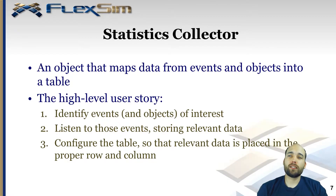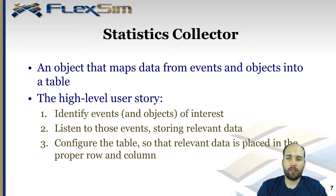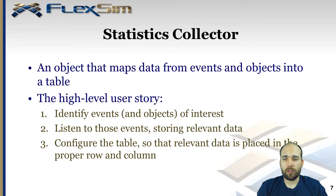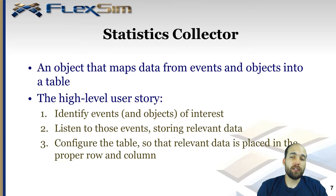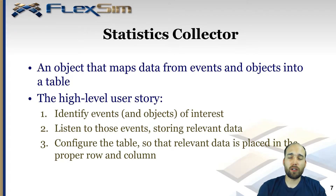So what is a statistics collector? It's an object that maps data from events and objects into a table. First you identify objects and events you're interested in, then you set up the statistics collector to listen to those events and store relevant data, and finally you configure the table contained in the statistics collector so that the data you care about is placed in the correct row and column.